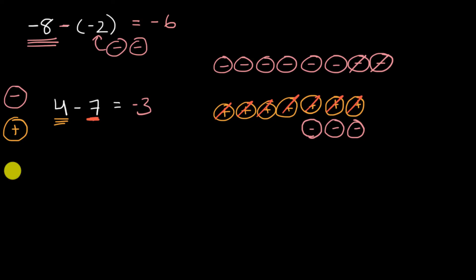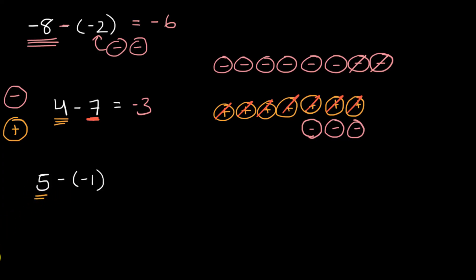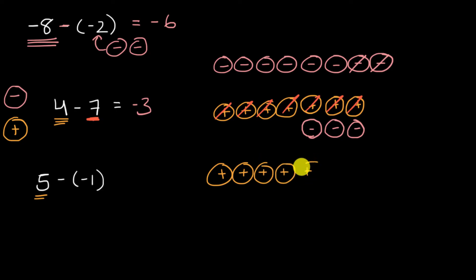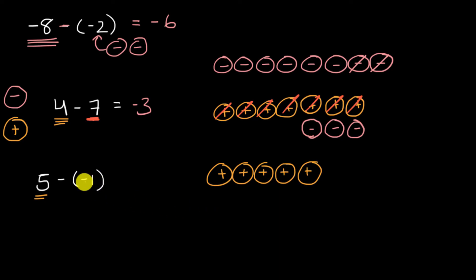Let's do another example. Let's say we want to do positive five minus negative one. Why don't you pause this video and see if you can do this with number chips? Let's first represent positive five with five positive number chips — one, two, three, four, and five. We're not taking away a positive number; we're taking away a negative number, so we need to have a negative chip in order to take it away. We're only taking away one negative chip, so let's add one pair — remember, adding a pair doesn't change the value because they cancel out.